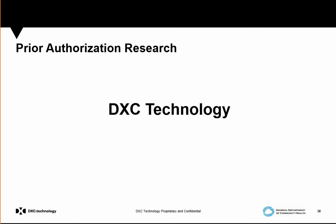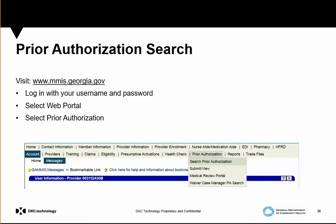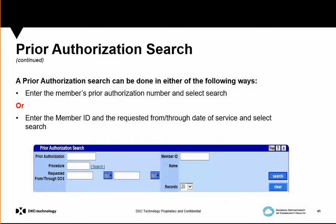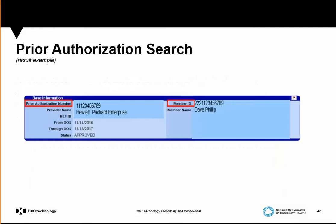Prior authorization research can also be completed through the website. Log in at www.mmis.georgia.gov with your username and password, select the web portal option, and you can search for any open prior authorization that was approved. Go to Prior Authorization from the drop-down and select Prior Authorization Search. If you have the PA number, you can search to see if the PA was approved. Or you can enter the member ID and the from and through timeframe, then hit Search. The results will display the member ID, date of service, and status under the Prior Authorization Search tab.